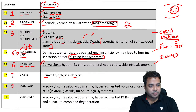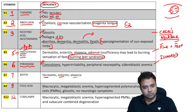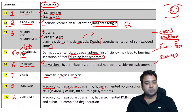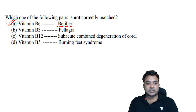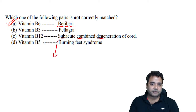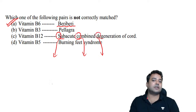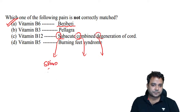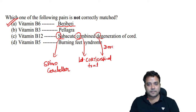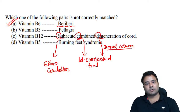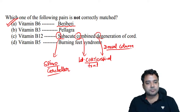Folic acid (B9) and cobalamin (B12) share common features: macrocytic megaloblastic anaemia, hypersegmented neutrophils, and glossitis. But in folic acid deficiency there are no neurological symptoms. In cobalamin (B12) deficiency, you get SACD — subacute combined degeneration. Tracts affected: S for spinocerebellar tracts, C for lateral corticospinal tracts involved in pain and temperature, D for dorsal columns involved in proprioception. All these tracts are damaged in B12 deficiency, not B9 deficiency.